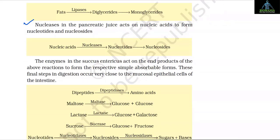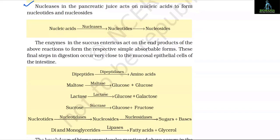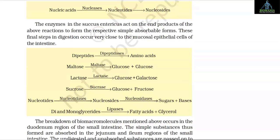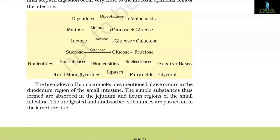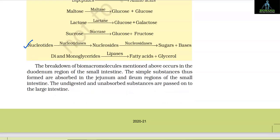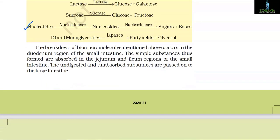The enzymes in the succus entericus act on the end products of the above reactions to form the respective simple absorbable forms. These final steps in digestion occur very close to the mucosal epithelial cells of the intestine: dipeptides are converted into amino acids by dipeptidase; maltose into glucose + glucose by maltase; lactose into glucose and galactose by lactase; sucrose into glucose and fructose by sucrase; nucleotides into nucleosides by nucleotidase, then into sugars and bases by nucleosidases; and di- and monoglycerides into fatty acids and glycerol by lipases.